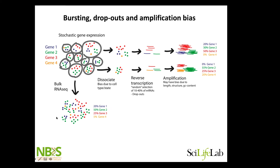If you instead do bulk RNA-seq, you get better proportions — not perfect either, but a better estimate of the proportions of the different genes. It's good to be aware that the levels we detect, if you compare to bulk RNA-seq without amplification, even though we have UMIs to control for this bias, this step is also not perfectly unbiased. So there might be differences between bulk RNA-seq and when you aggregate all your single-cell RNA-seq data.